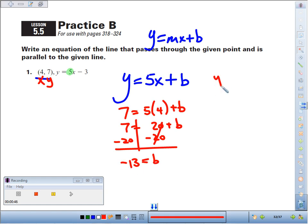So your full equation then would be y equals the slope, which was parallel. It's going to be 5, but this line has an equation of negative 13.